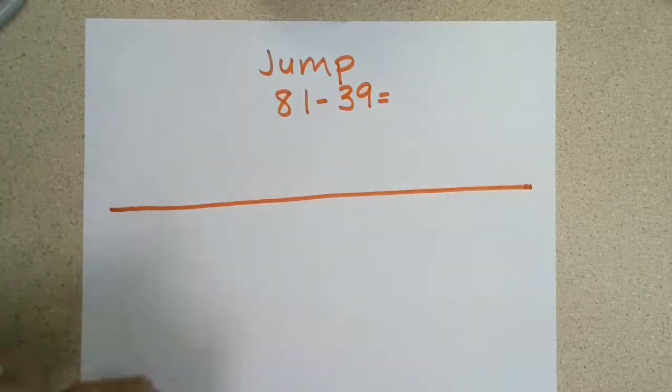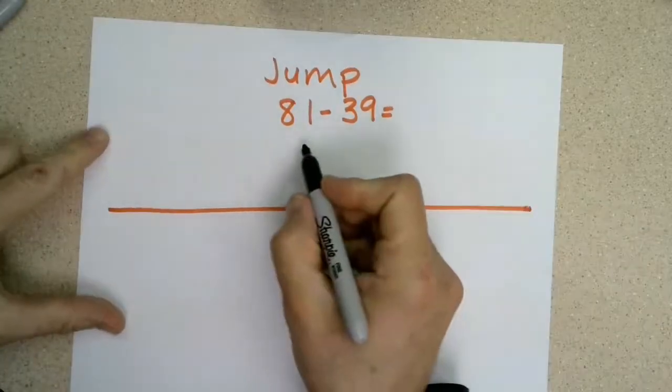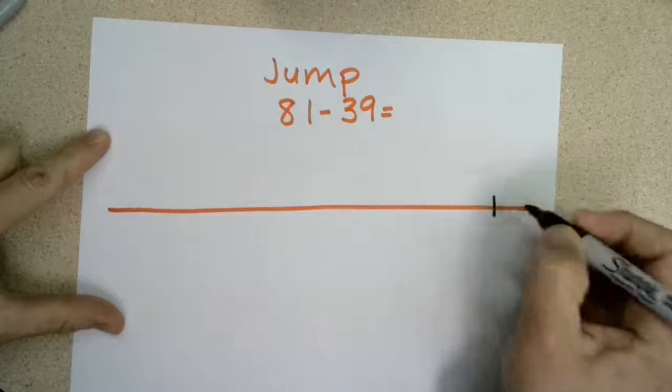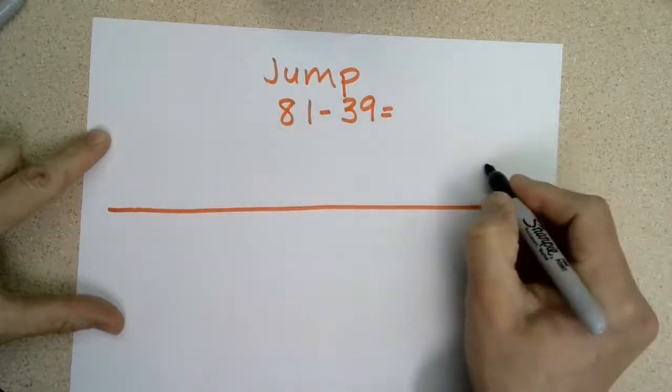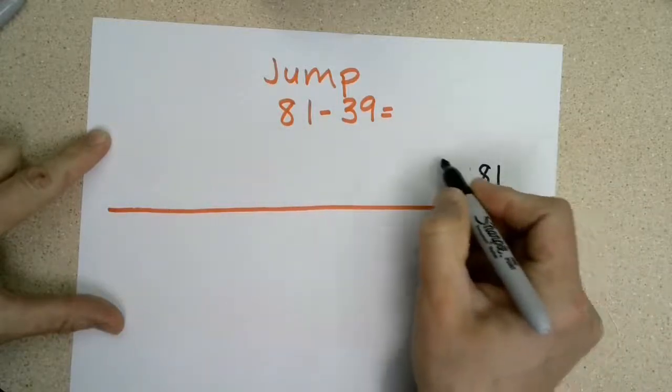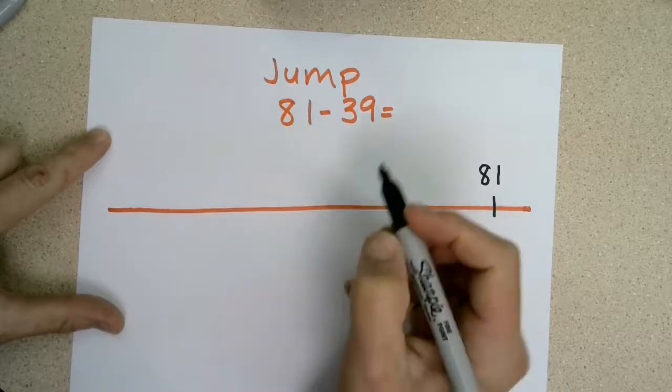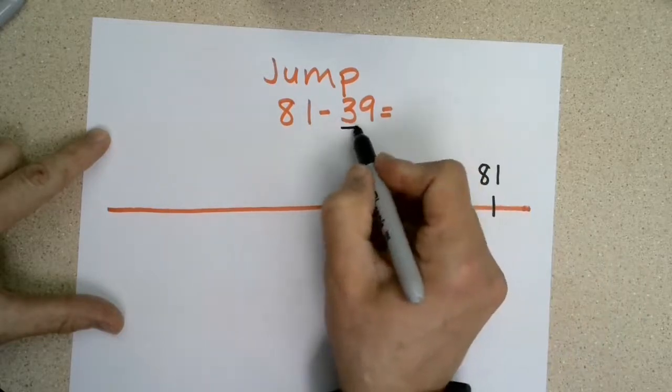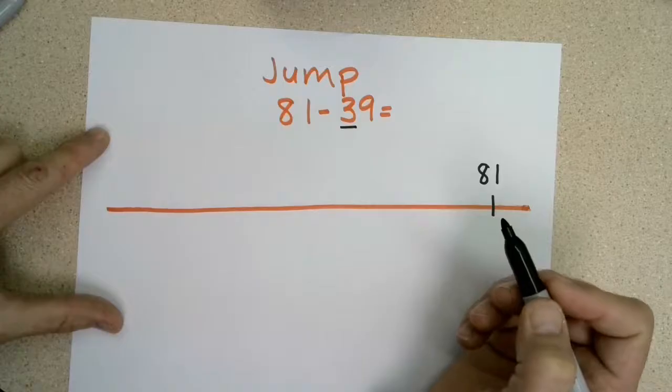When I use the jump strategy, I'm going to start with the larger number 81 and put it on the left side because we're removing, going backwards on my number line. I'm going to look at how many tens I have. I have three tens and nine ones.